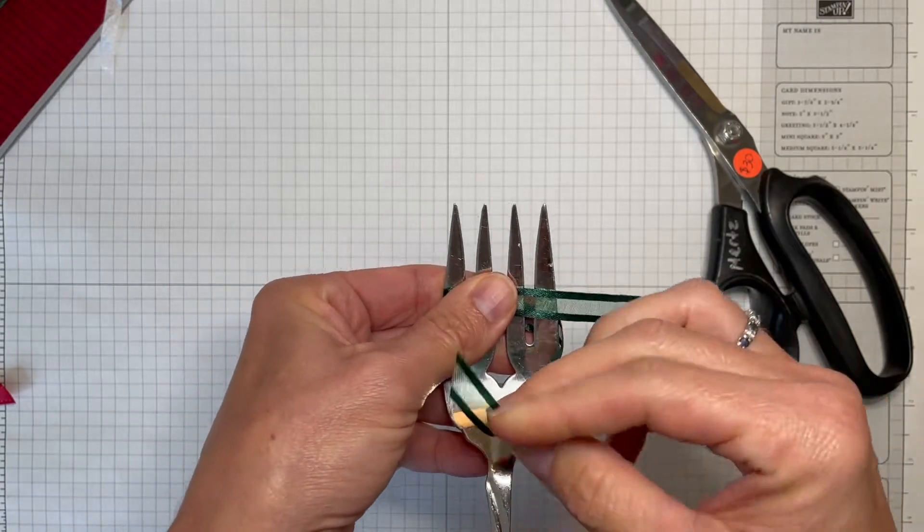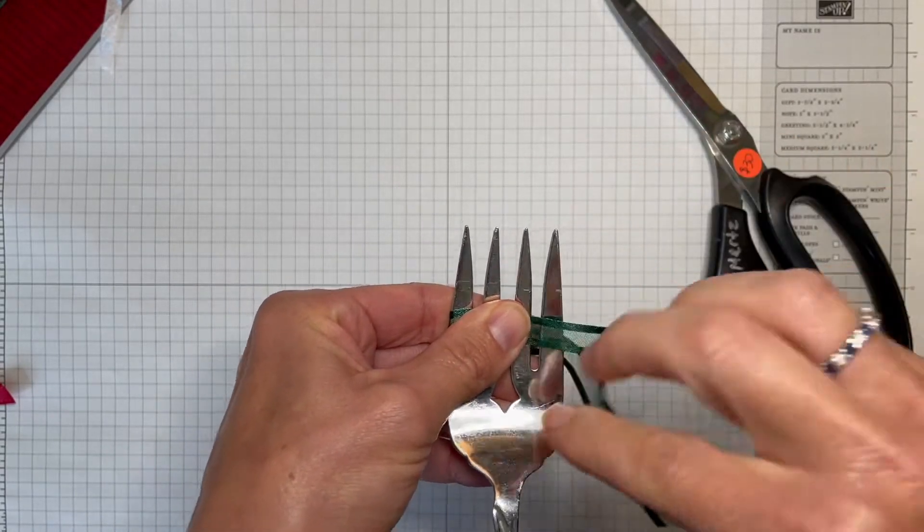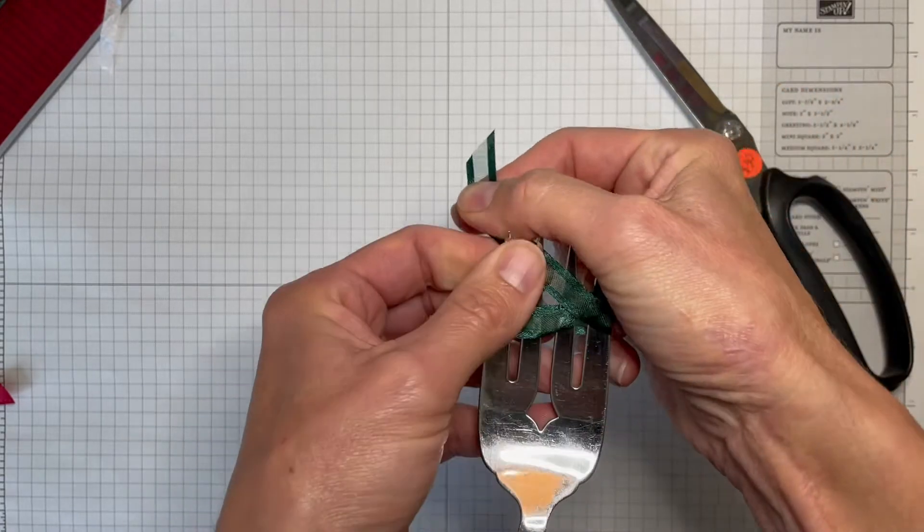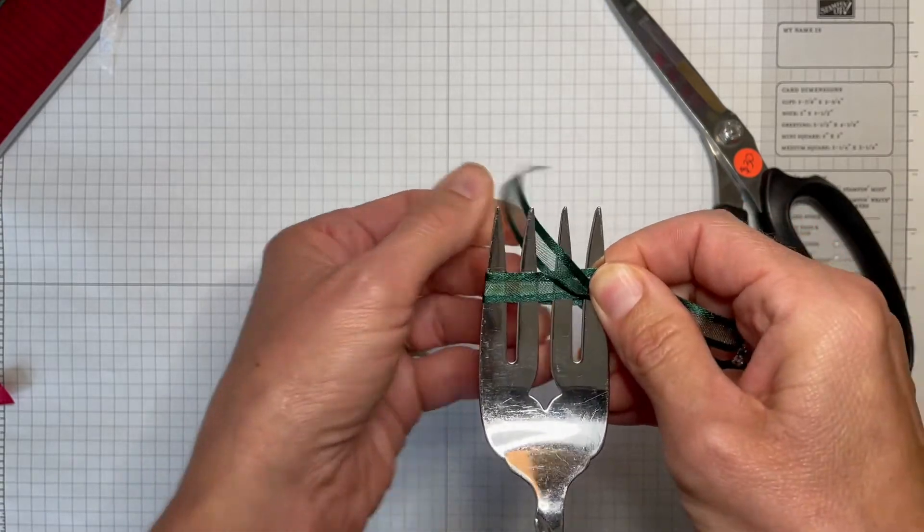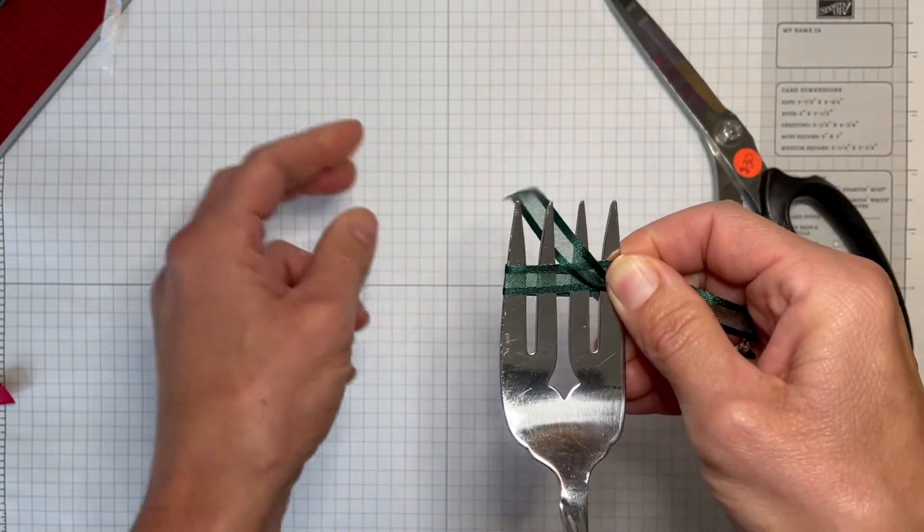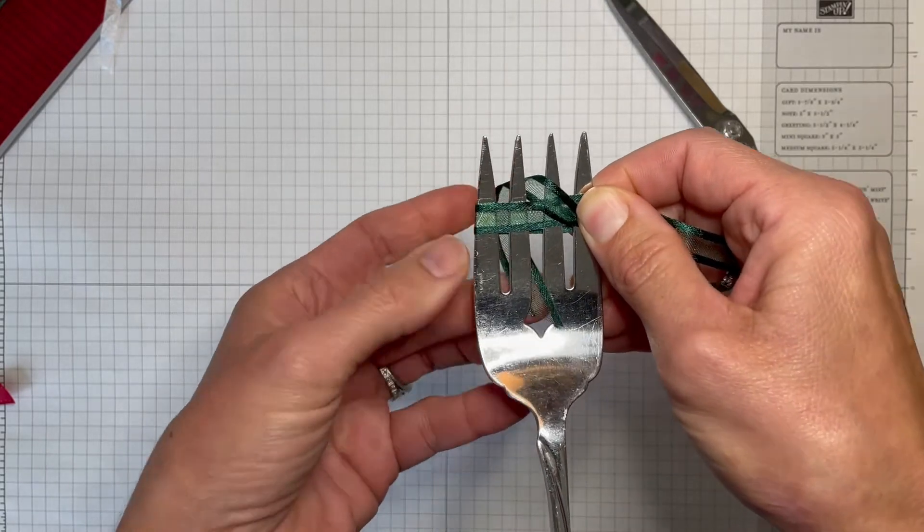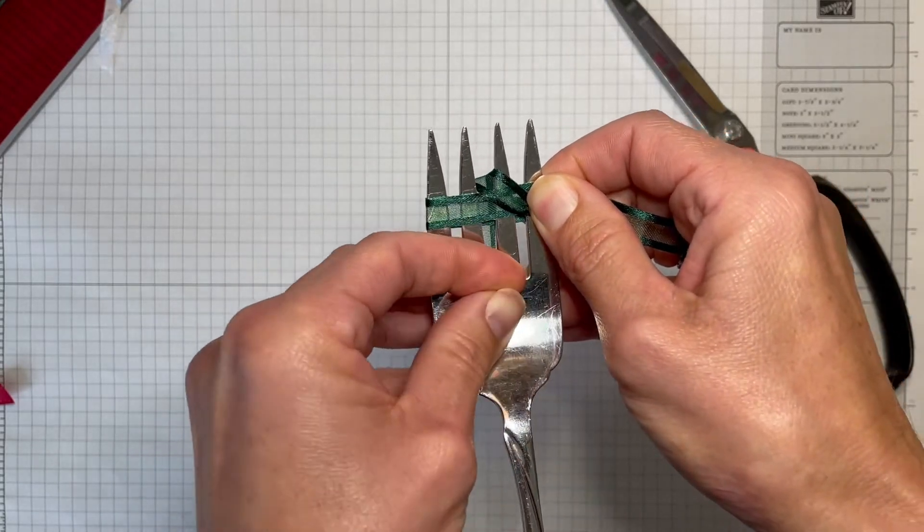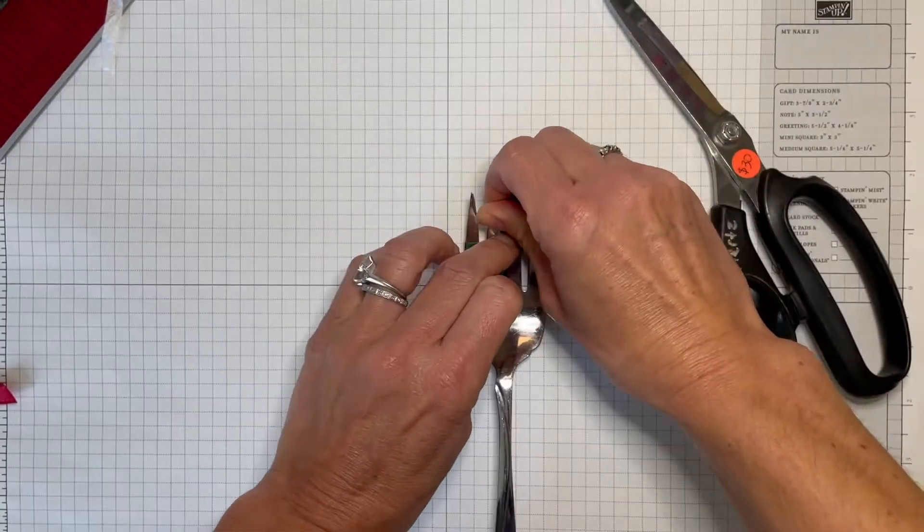You're going to start by bringing this bottom tail up over the top. Then you slide it through the center tine, a little space in the middle. You just kind of keep everything else still. This one's back here, and you're just going to bring it back up through that center hole right there in the middle.